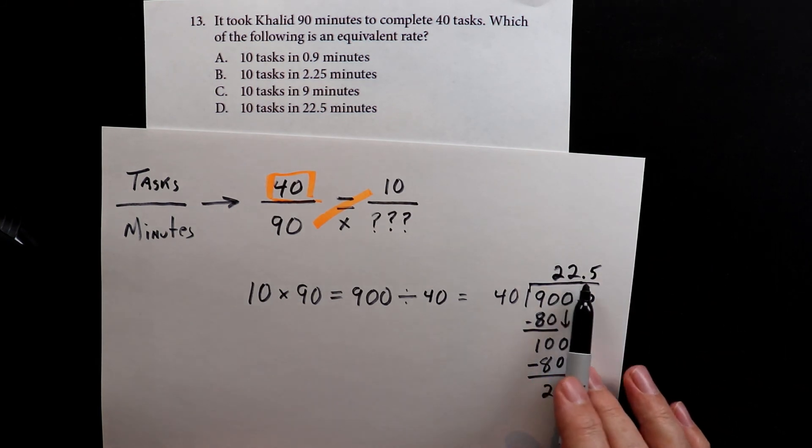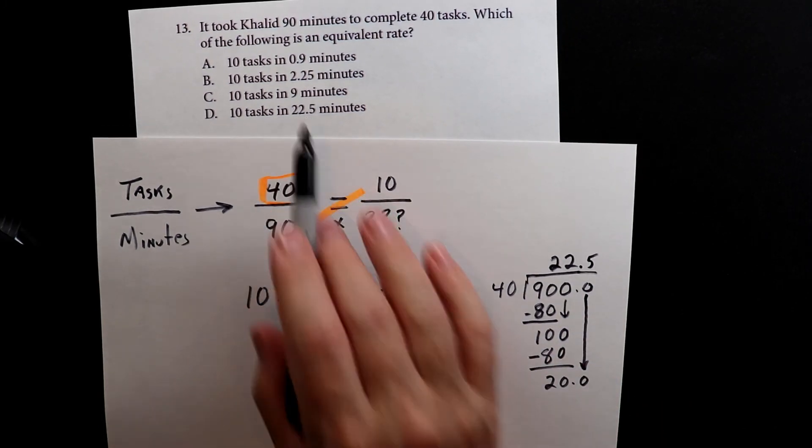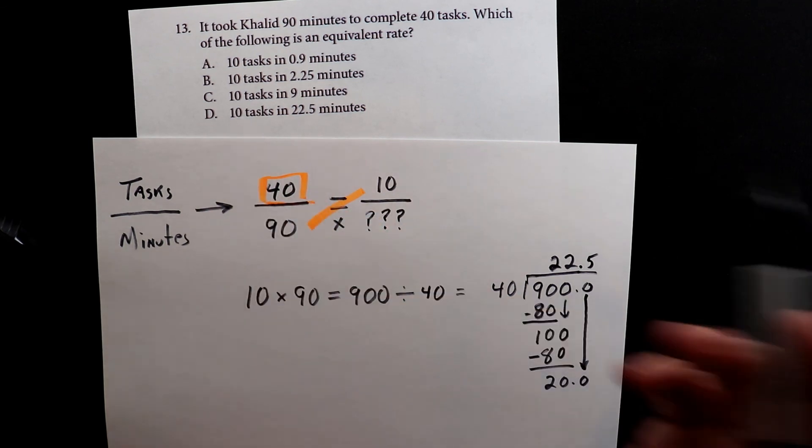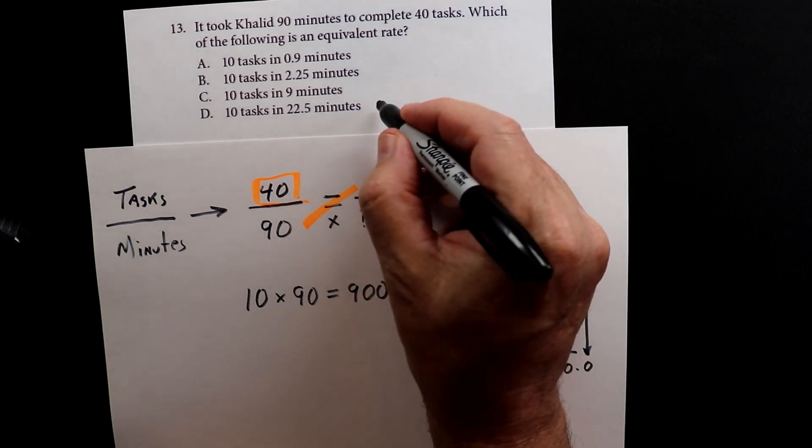So 22.5 tasks, I'm sorry, 22.5 minutes to complete 10 tasks. So this is your final answer.